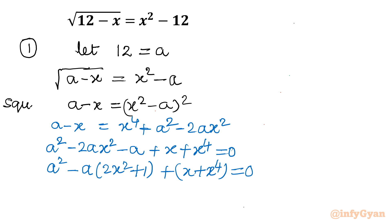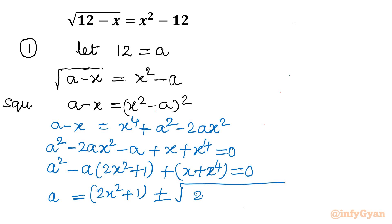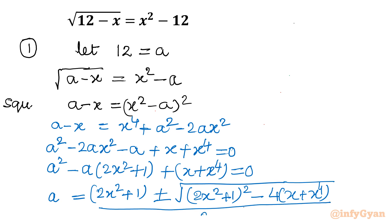Applying the quadratic formula for a: a equals minus b, which is minus of minus (2x squared plus 1), so that gives 2x squared plus 1. Then plus or minus square root of b squared, which is (2x squared plus 1) whole square, minus 4ac where a is 1 and c is x plus x to the power 4. All divided by 2.